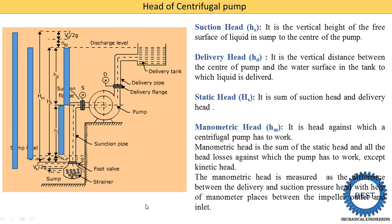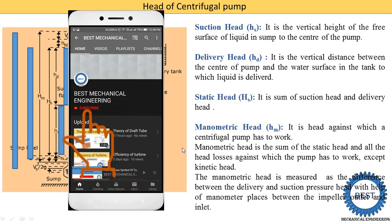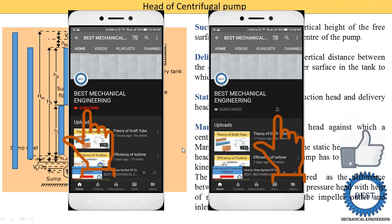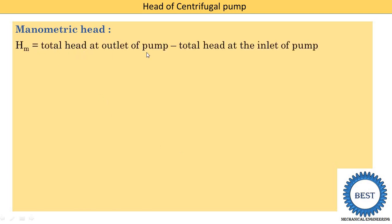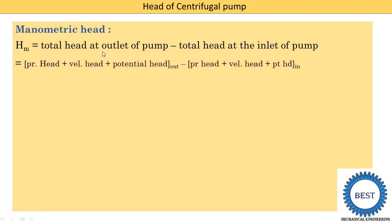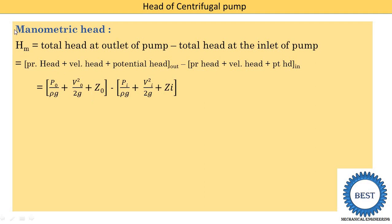The manometric head HM is equal to the total head at the outlet of the pump minus the total head at the inlet of the pump. Using Bernoulli's equation, the energy at inlet and outlet is the same — pressure energy plus kinetic energy plus potential energy. So: HM equals (P_o / ρg + V_o² / 2g + Z_o) minus the corresponding inlet terms. By using this equation we can find the manometric head.